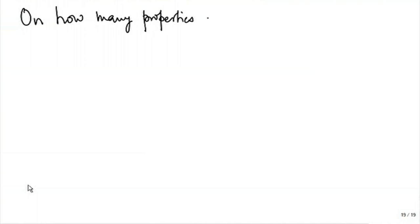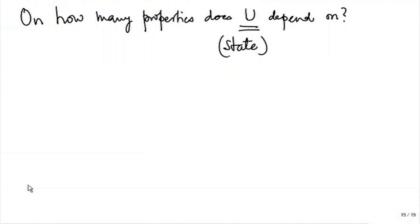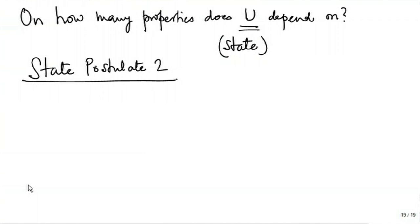The second question is: on how many properties does U — or indeed the complete state of the system — depend? That brings us to the second state postulate. Although this is state postulate two, after studying the second law we will see a demonstration of why this postulate turns out to be true.